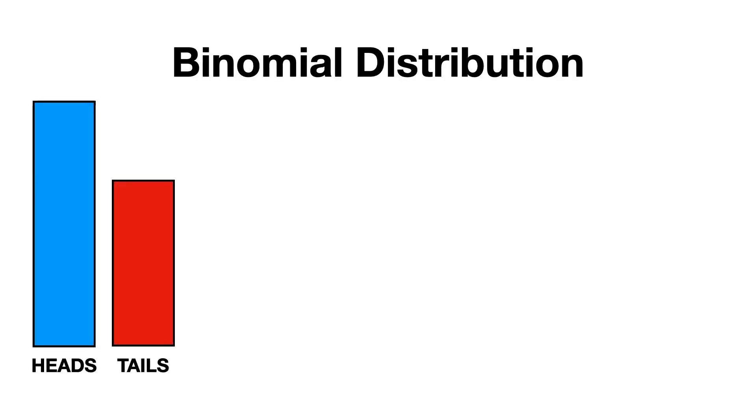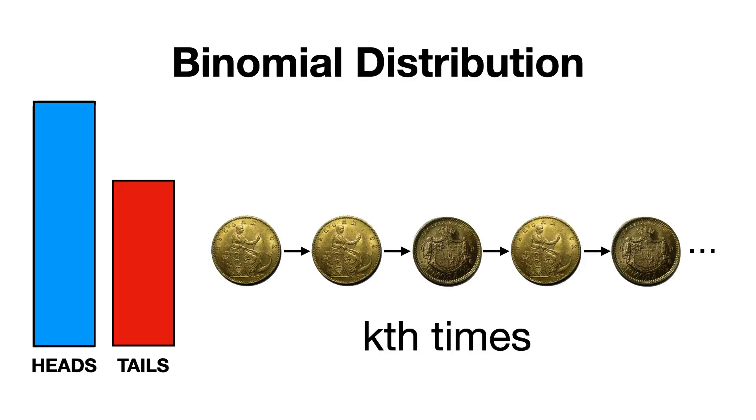Building on that, we have the binomial distribution, which models multiple independent Bernoulli trials. Suppose we flip a coin not just once, but say 10 times, and we want to know the probability of getting a specific number of heads.